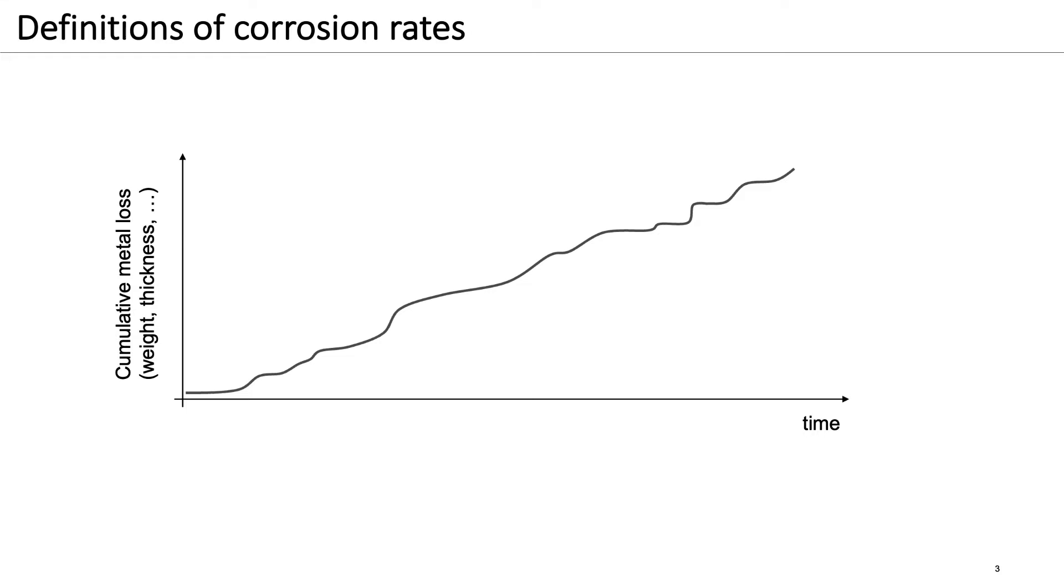In reality, corrosion generally occurs at rates that vary over time. This means that there may be stages where appreciable metal loss occurs in a short time and there are other periods where negligible metal loss occurs.